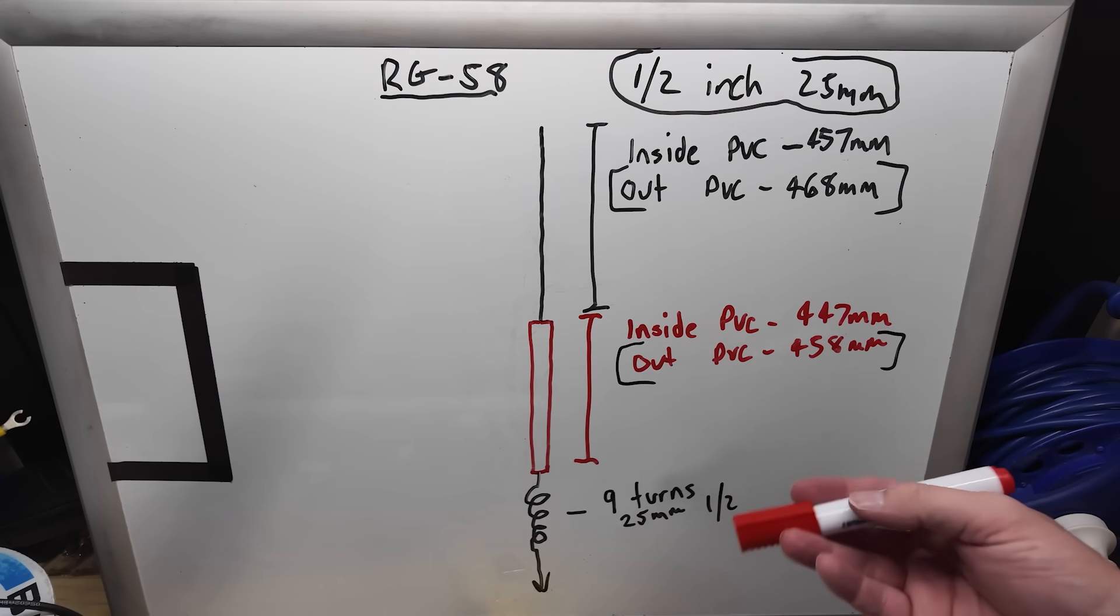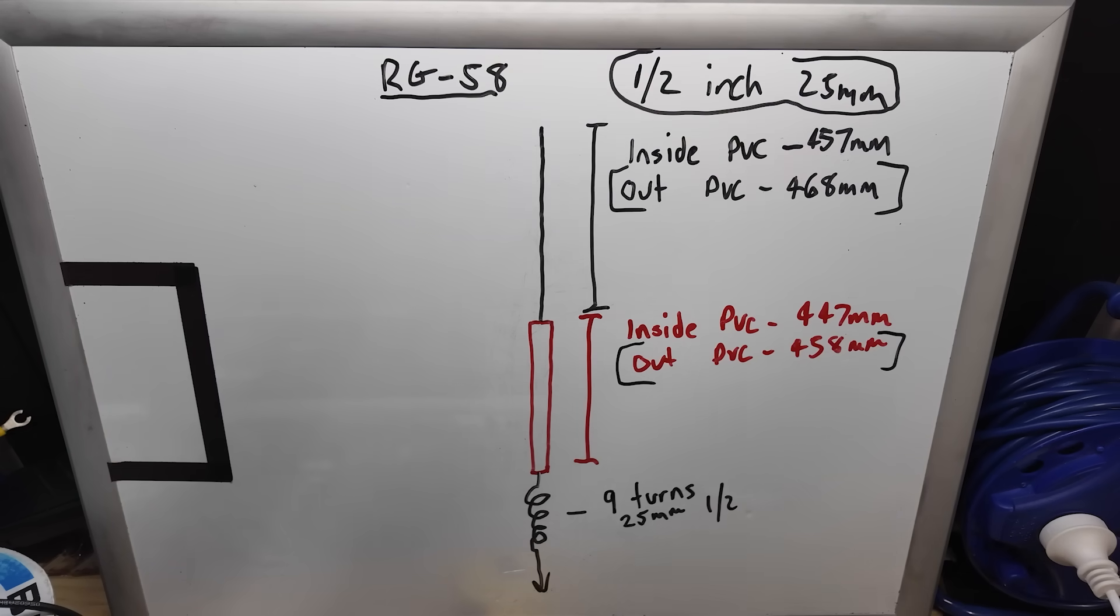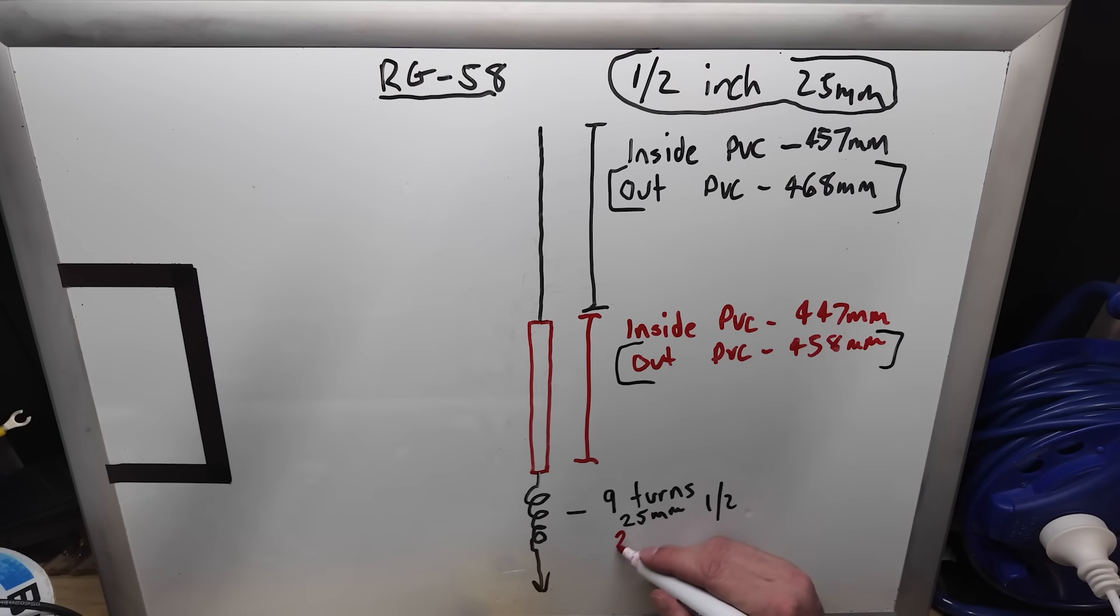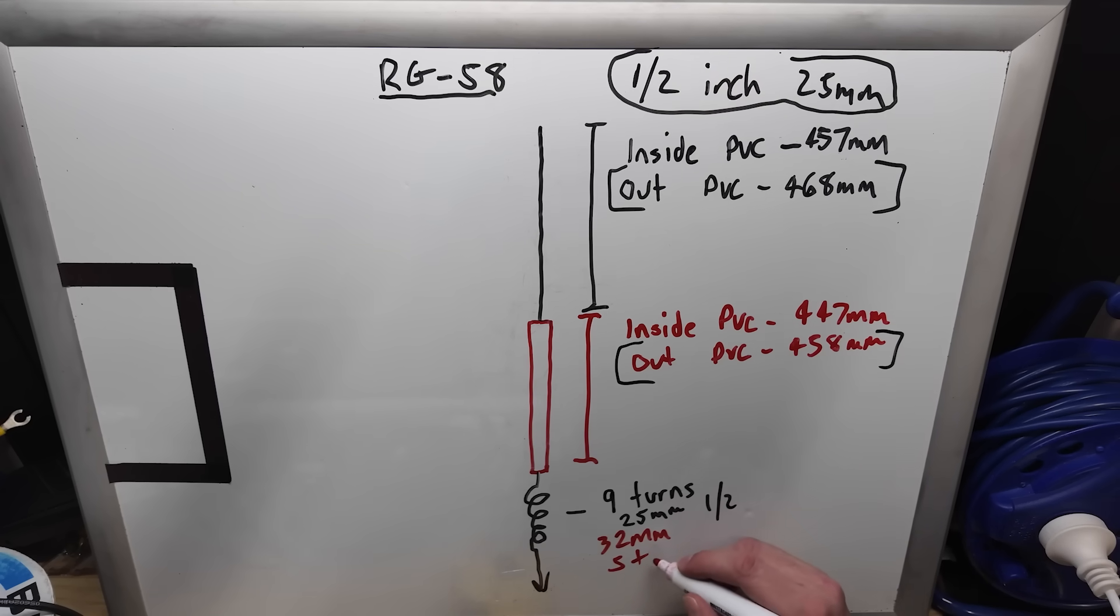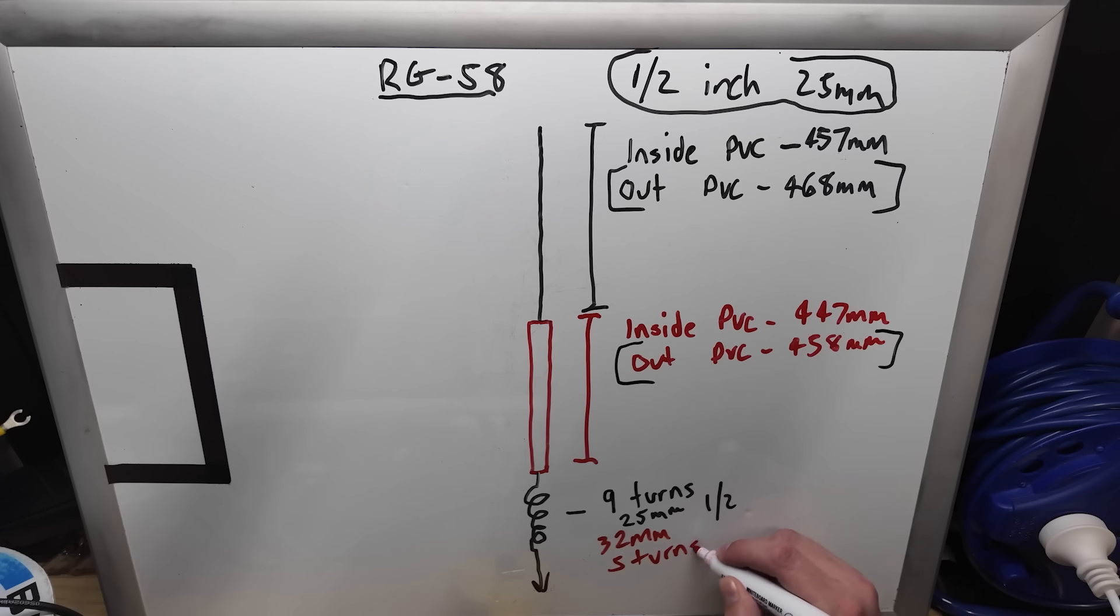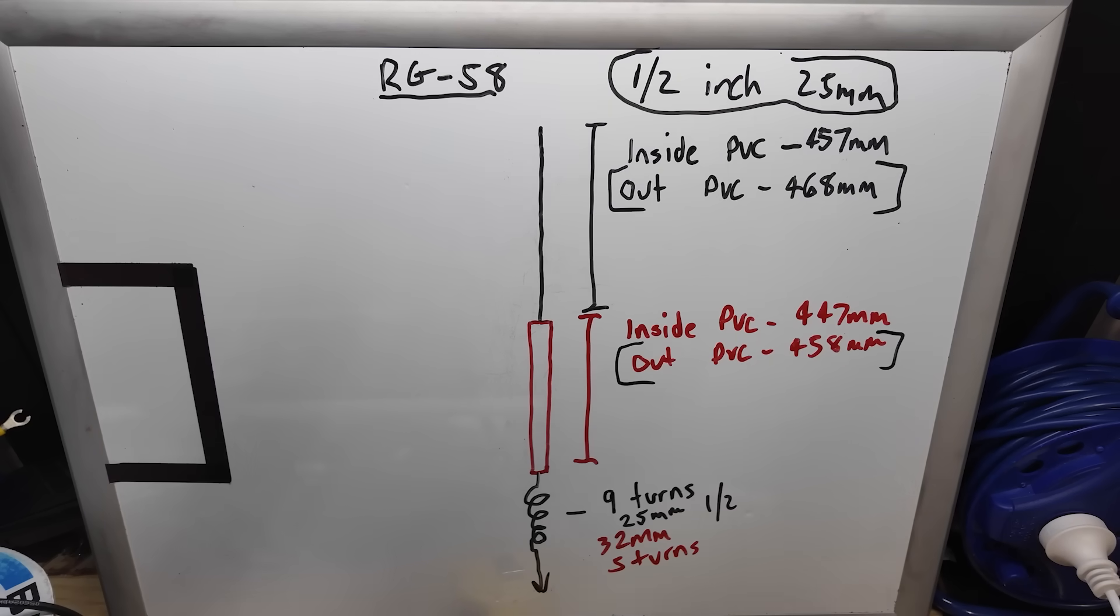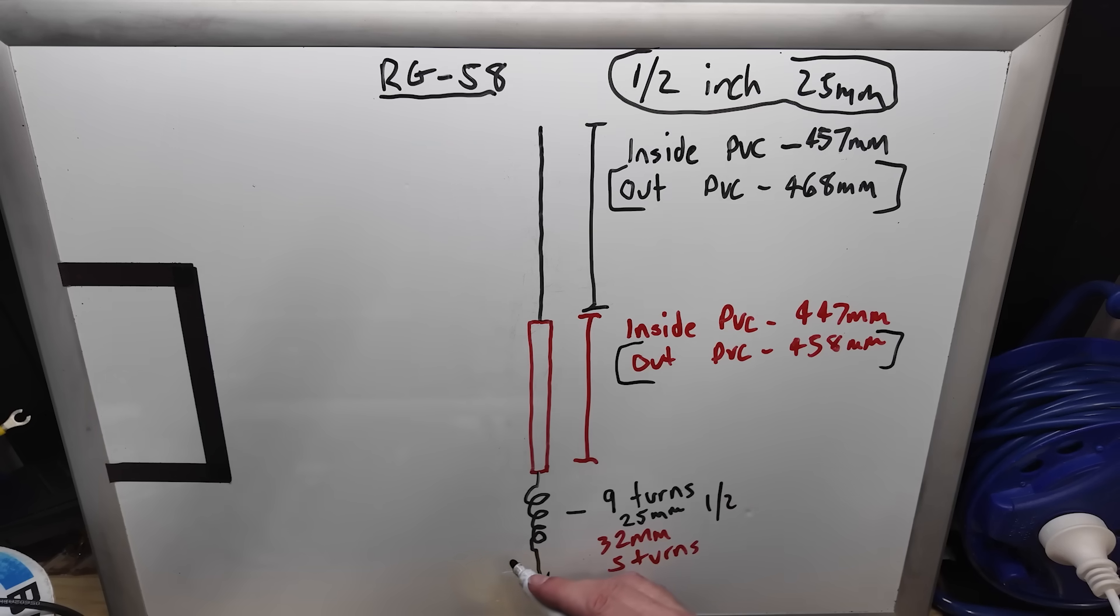Now if I want to go slightly bigger, here in Australia it's very common to get 32 millimetre conduit, which is heavy duty stuff, we're going to use five turns. Five turns on that if you want to use that as an alternative. Now once you go past the coil, this is just a length, doesn't matter what length it is, back to your radio. So try and keep this as short as possible because of the loss of the coax.